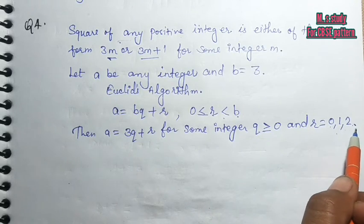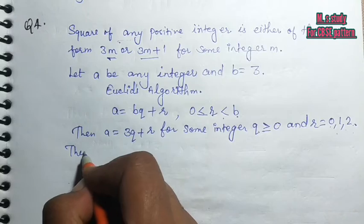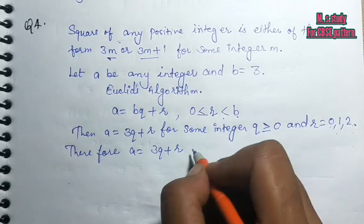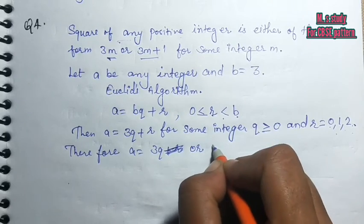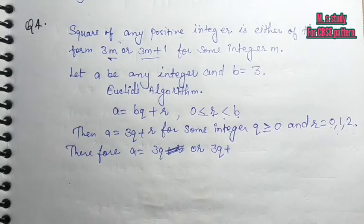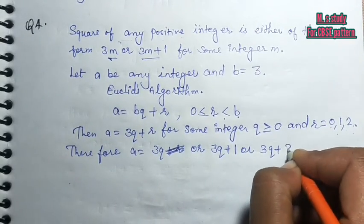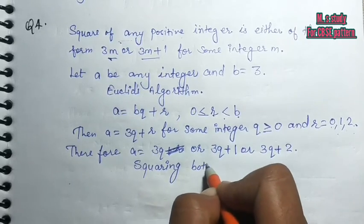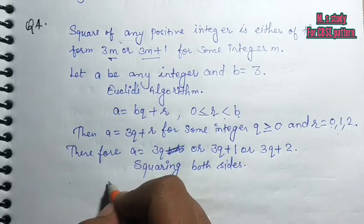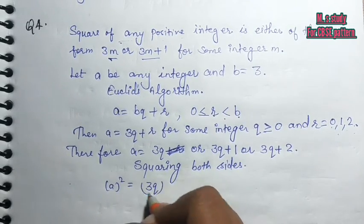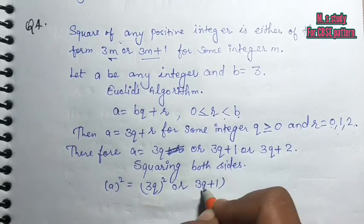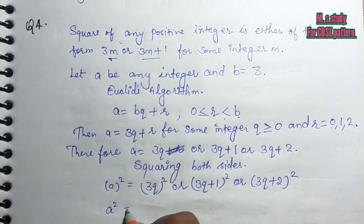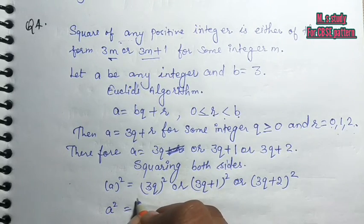Therefore A equals 3Q, or 3Q plus 1, or 3Q plus 2. Now, squaring both sides. Because we have to find the square, which is A² equals (3Q)², or (3Q+1)², or (3Q+2)².